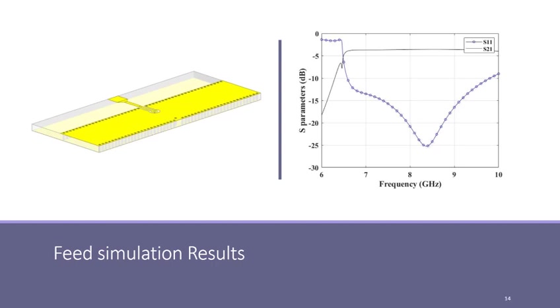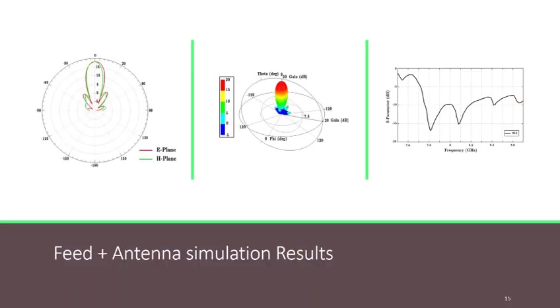You can see the simulation results for the whole structure, including the feed network and the antenna. You can see the 3D radiation pattern of the whole antenna at 8 GHz, showing a directive gain of 18 dB. The simulated 2D patterns of the whole antenna that you can see at the left of this slide. And you can also see the simulated return loss of the whole antenna, which shows a perfect match around 8 GHz.